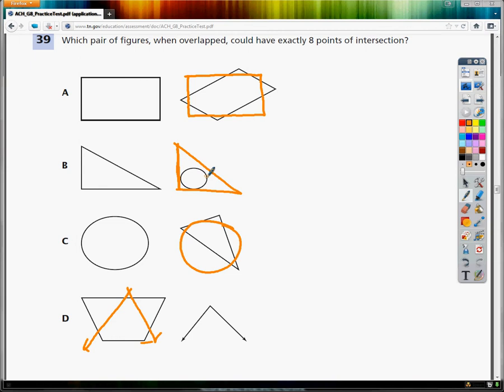Let's go up from the bottom. In this case, the smaller of the two figures, the one with the least sides, would be the angle. So I have 1, 2, 3, 4 points of intersection. I'm going to change colors so you can see the points of intersection.